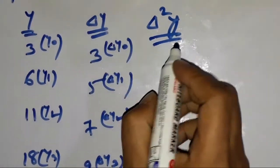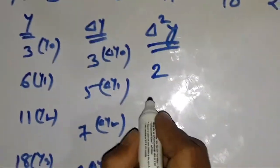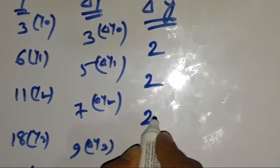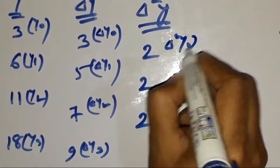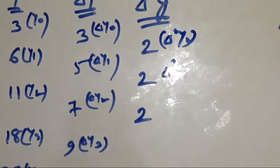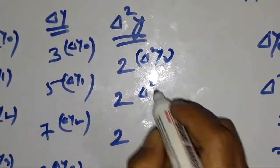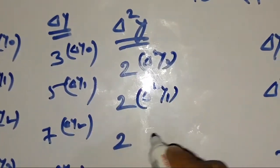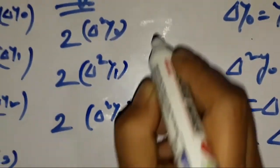So ΔY₁ minus ΔY₀ gives the Δ²Y column: 5−3=2, 7−5=2, 9−7=2. This is the column of Δ²Y. We label them Δ²Y₀, Δ²Y₁, and Δ²Y₂.